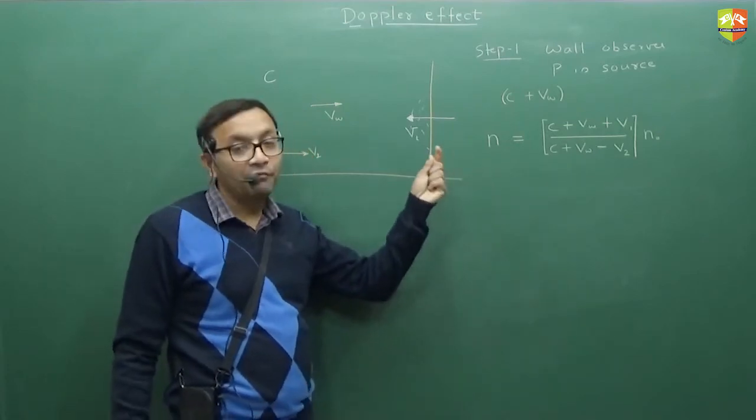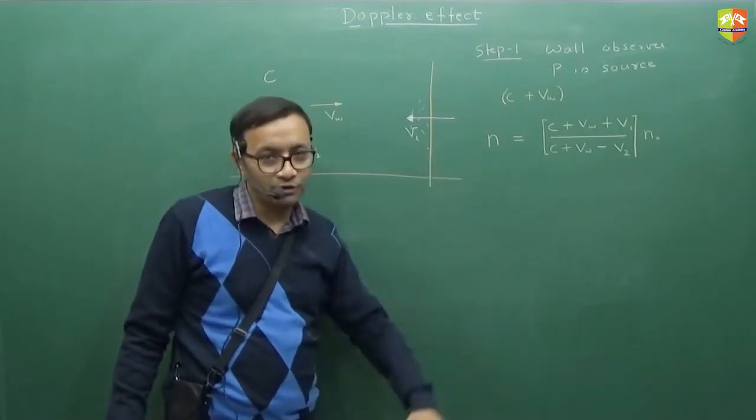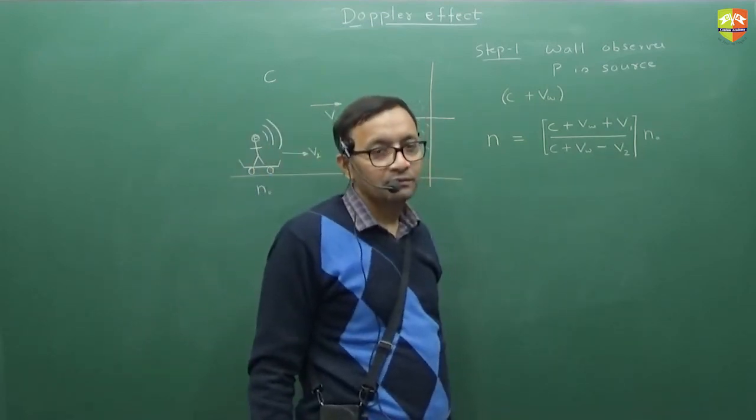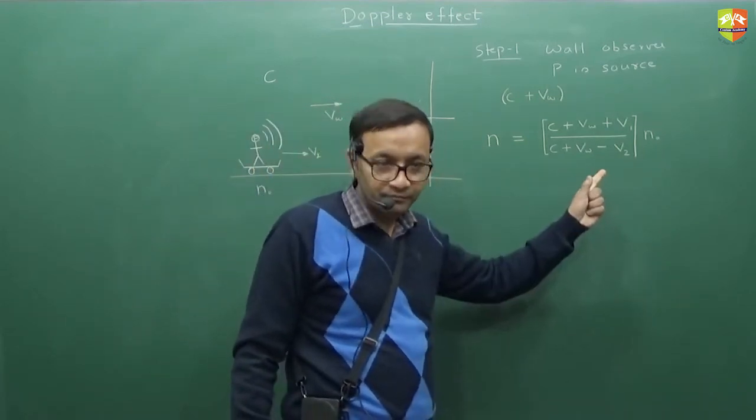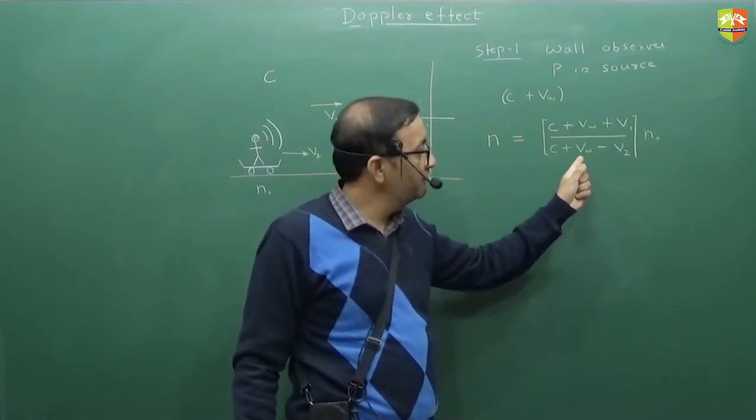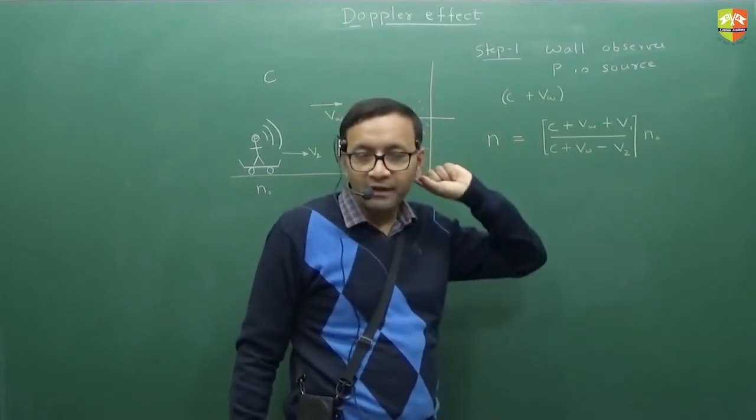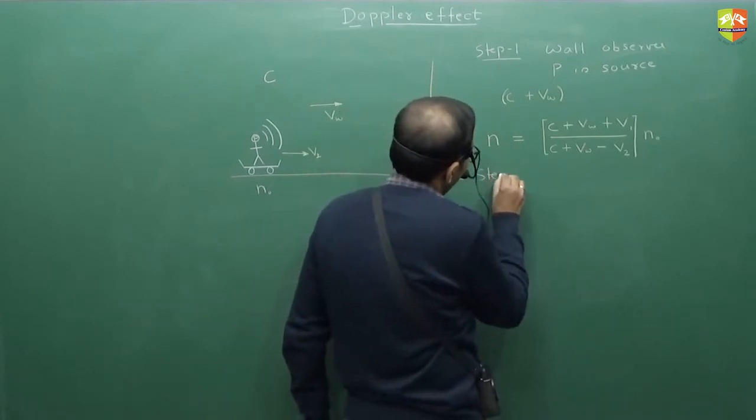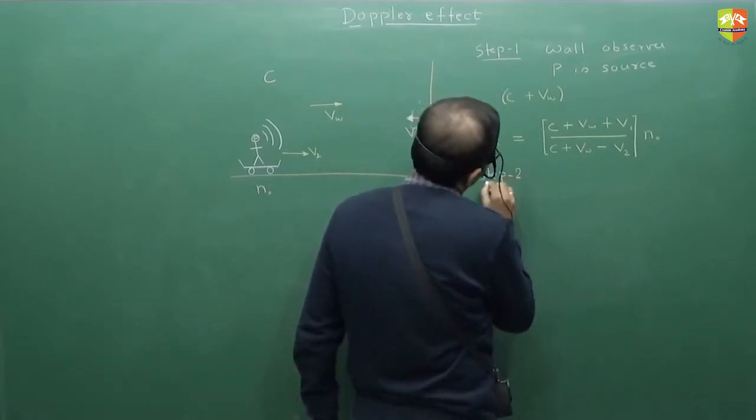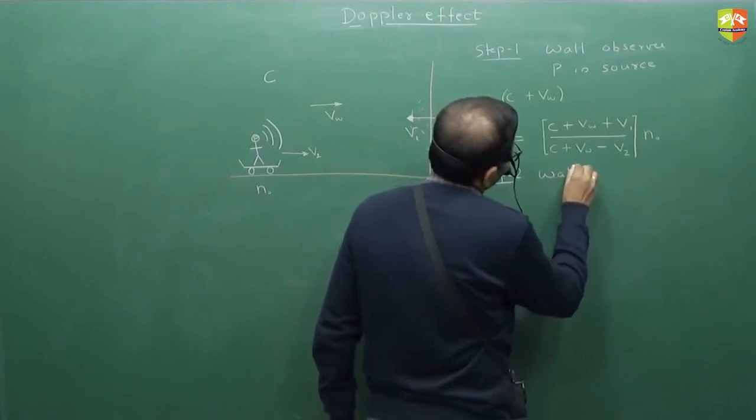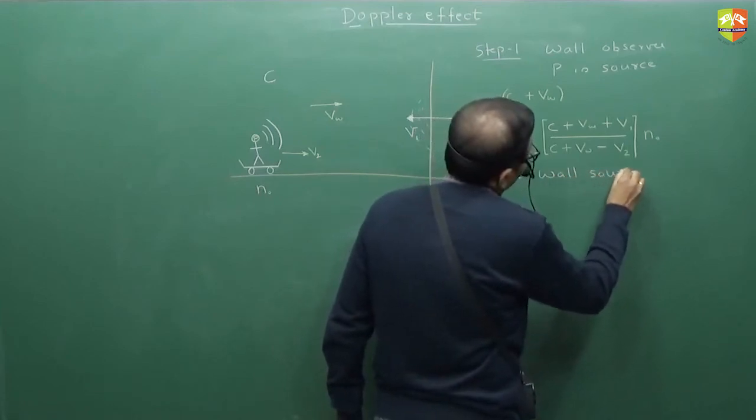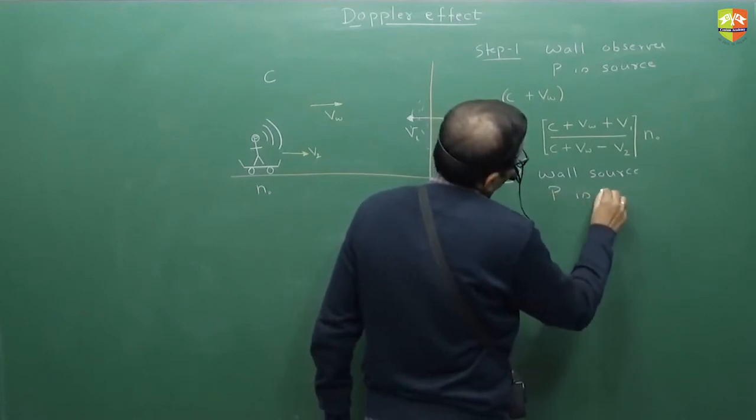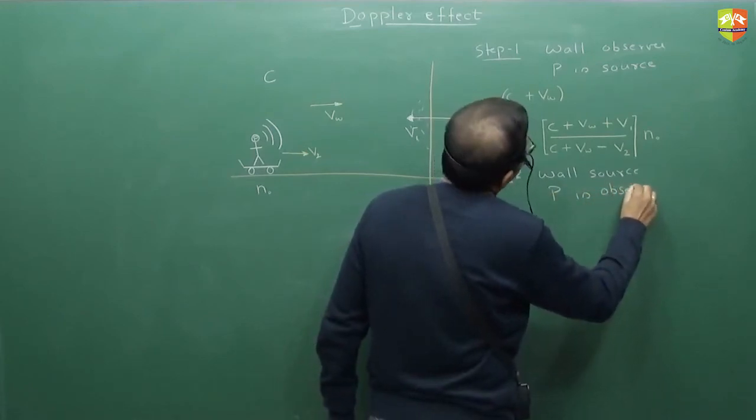This is the frequency the wall will receive as a source. What frequency will wall reflect back? Same. This frequency n will be reflected by the wall. But now wall is source and role reversal.